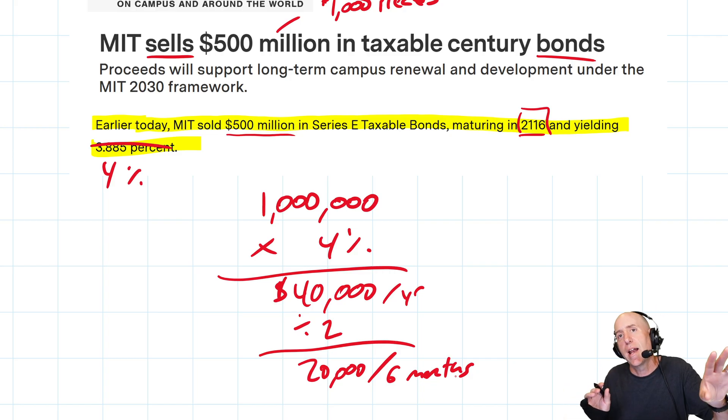Let's imagine you're a retiree - you give MIT a million bucks, they give you 4% per year, that's $40,000 per year. And you think, 'I can live on $40,000 a year.' Divide by two, so every six months they write you a check of $20,000.